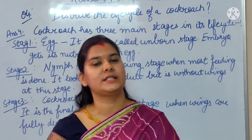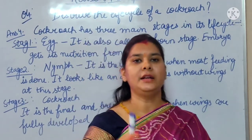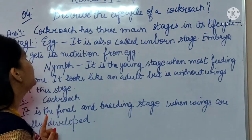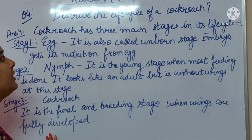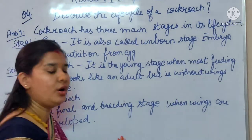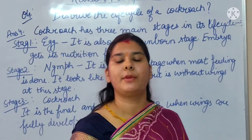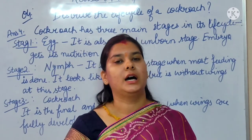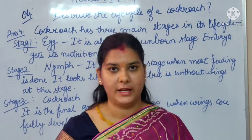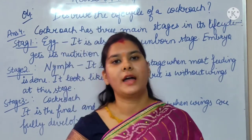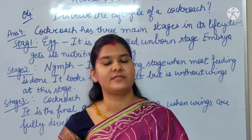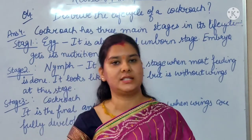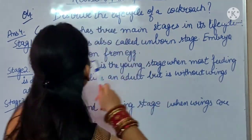You have to do this revision assignment in your science notebook. Now let's come to question number 4. Your question number 4 is: describe the life cycle of a cockroach. In this chapter we discussed about the life cycle of the cockroach, the frog, and the butterfly. Butterfly and frog have 4 stages in their life cycle, but the cockroach has 3 stages.